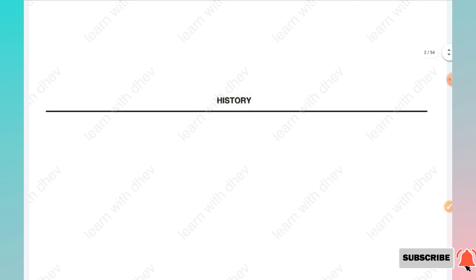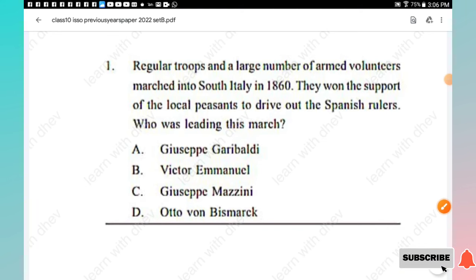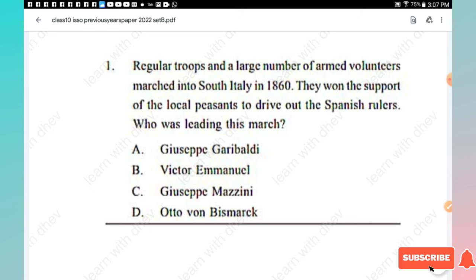The first section is History, which contains 15 questions, each carrying one mark. Question 1: Regular troops and a large number of armed volunteers marched into South Italy in 1860 and won the support of local peasants to drive out the Spanish rulers. Who was leading this march? The right answer is Option A, Giuseppe Garibaldi.